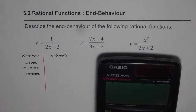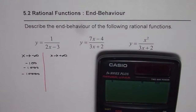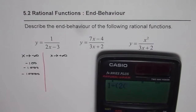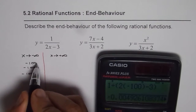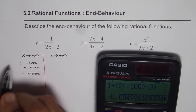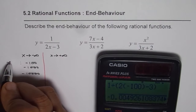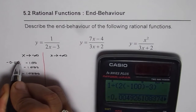We'll use a calculator. We have 1 divided by (2x minus 3). So that is 1 divided by, within brackets, 2 times negative 100, minus 3, equals negative 1 over 203. In decimals, it is approximately 0.0049. So the y value is about minus 0.005.